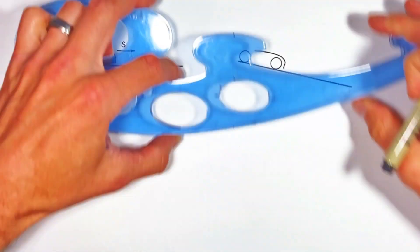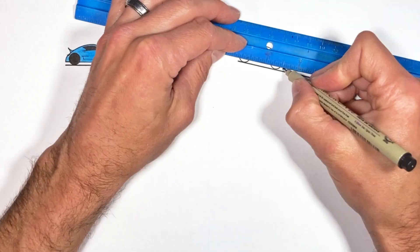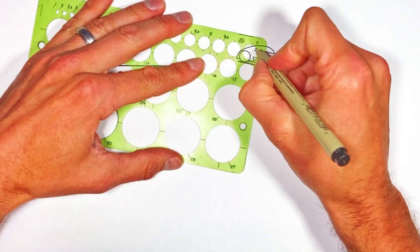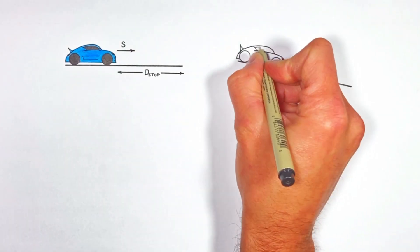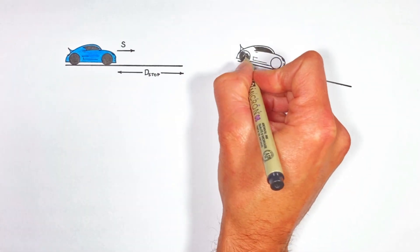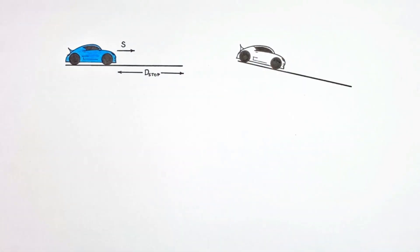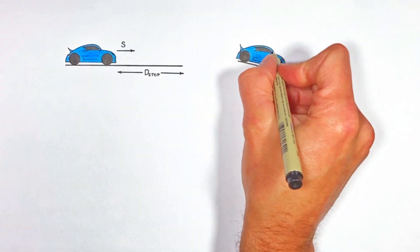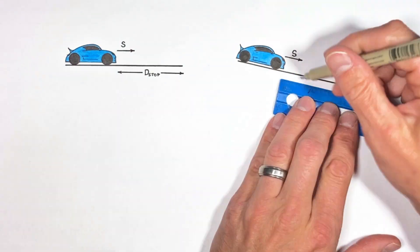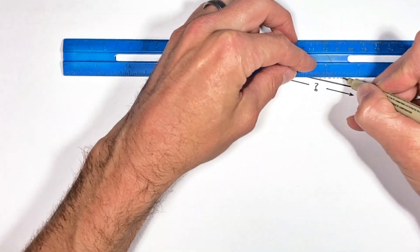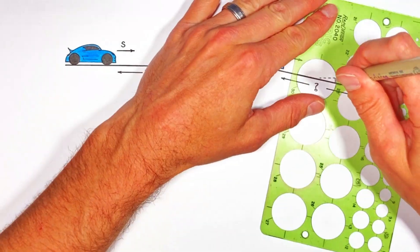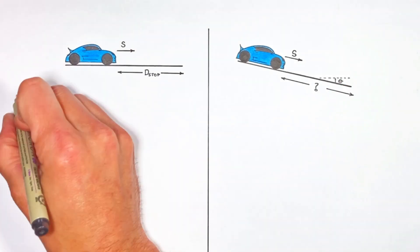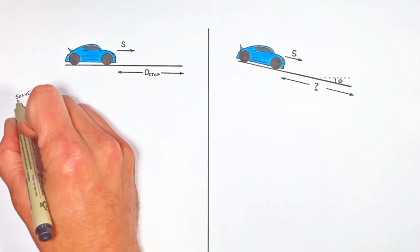The first thing we're going to do is take a look at the car on the level ground, and we're going to solve for the coefficient of friction, or mu, between the tires and the road. To do that, we'll first take a look at the kinematic equations.